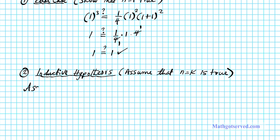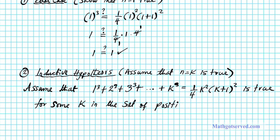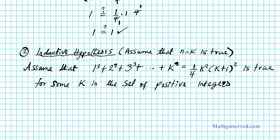So we assume that 1³ + 2³ + 3³ + ··· + k³ = (1/4) · k² · (k+1)² for k in the set of positive integers. That is our assumption clearly stated. The next thing we are going to do is the inductive step, which is the most involved part.